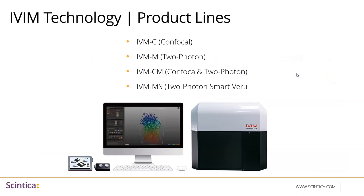There are four different configurations for this system. It comes as a confocal-only system or a two-photon-only system, and there is also a combined confocal and two-photon laser version. The newest version is a smart system — a two-photon smart system with a laser fixed at 920 nanometer wavelength for deep tissue imaging.